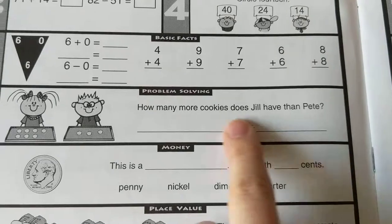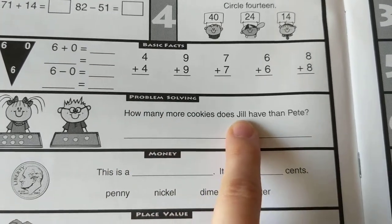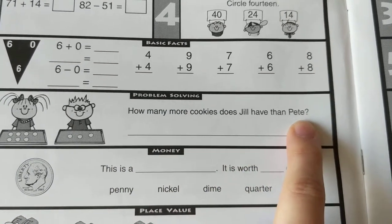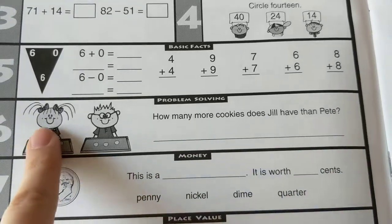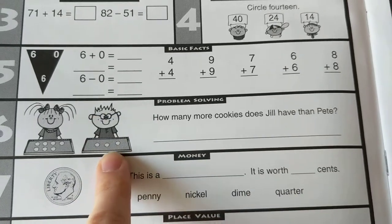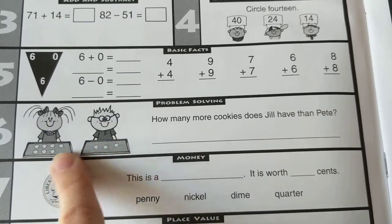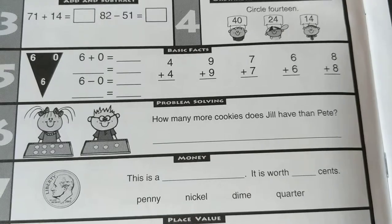Number six, how many more cookies does Jill have than Pete? How many more? That means subtracting. Here's Jill with her cookies. Here's Pete with his cookies. I need to subtract to see how many more Jill has.